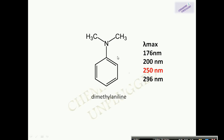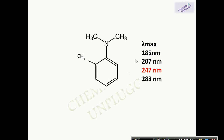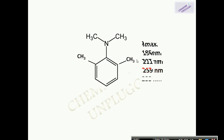It is an electron transfer band. But if we place another methyl group at the ortho position, other bands show an increase in absorption maximum because methyl group attachment shifts lambda max towards the right. But the electron transfer band shows a decrease in wavelength, because the molecule is no longer planar. The n orbitals and pi orbitals are no longer parallel. The molecule gets twisted, so there is no proper conjugation between the n orbital and pi orbital. On further adding a methyl group, this electron transfer band is completely removed because the molecule is completely twisted and the structure is no longer planar.